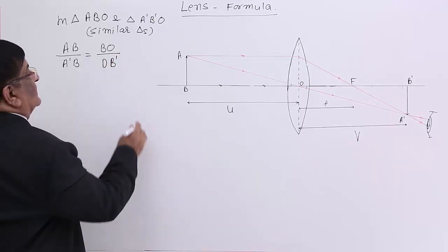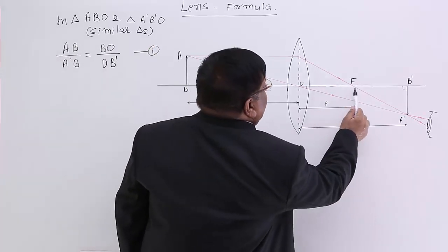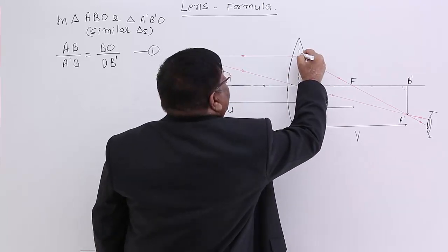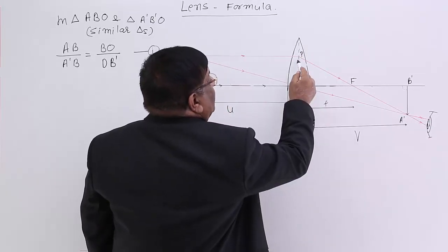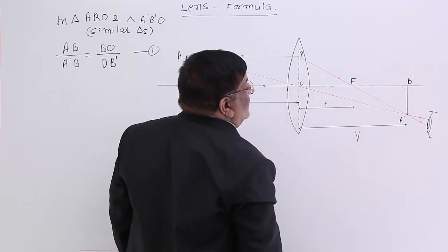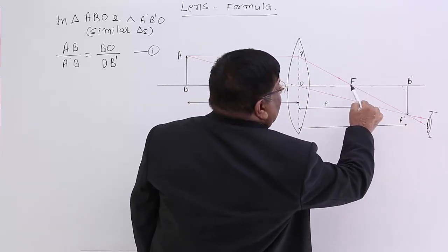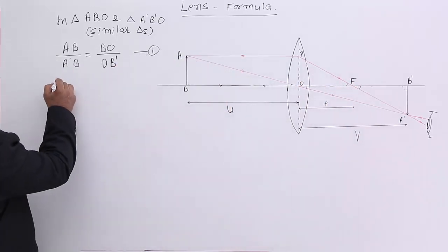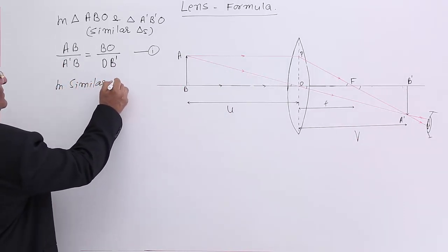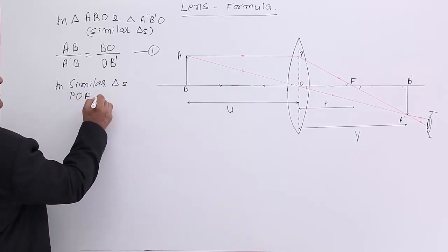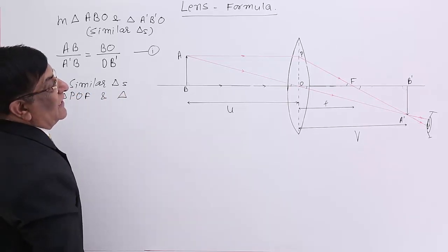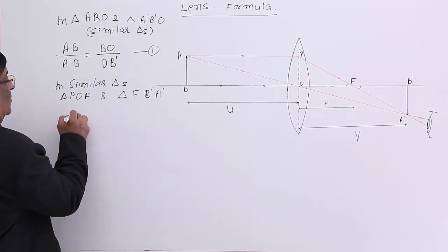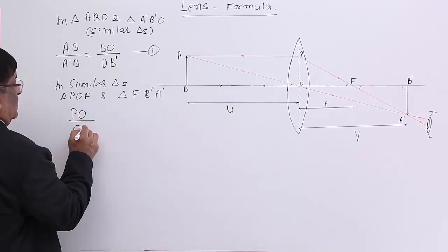The second pair of triangles is drawn from the ray through the focal point. Triangle POF is a right-angle triangle, and triangle FB'A' is also a right-angle triangle. These two angles are equal and both have 90° angles, so they are similar triangles. In these similar triangles — POF and FB'A' — the ratio gives PO / OF = A'B' / FB'.